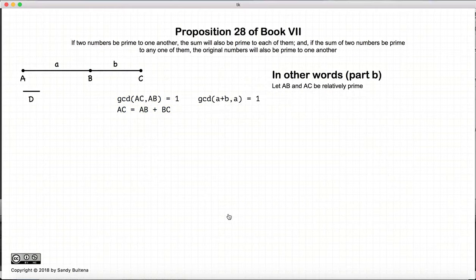Carrying on to the second part, we start off that the sum a plus b and one of its parts, a, is relatively prime, or AC and AB are relatively prime, then AB and AC will also be relatively prime. So again, if the sum is relatively prime to one of its parts, then it will also be relatively prime to another part.